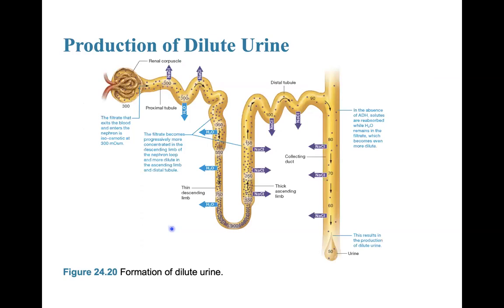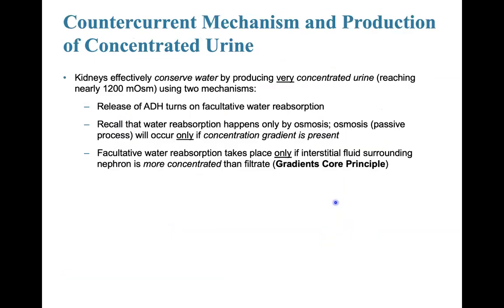In the absence of ADH, solutes are reabsorbed while water remains in the filtrate. As solutes leave, the concentration decreases. The kidneys effectively conserve water by producing very concentrated urine, reaching as high as 1200 milliosmoles.